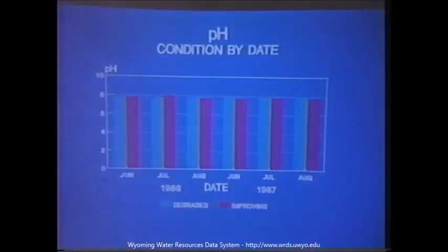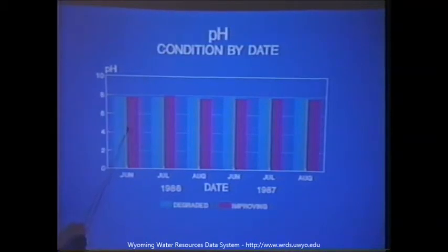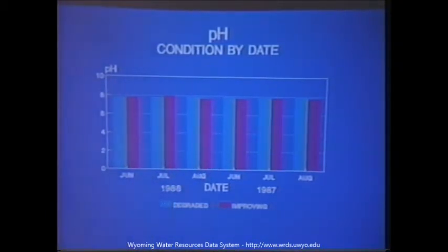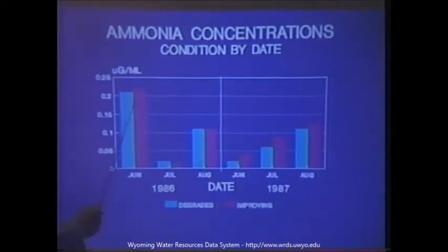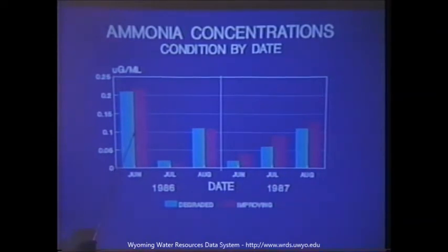For pH, there were some differences between degraded and improving conditions by date, but nothing significant emerged. One of the first things a person should look for in major differences between channel conditions is a shift in pH — due to microbial activities, if you're getting more salts, you'd expect a shift in pH. For ammonia concentrations, there were significant differences between years and between sampling dates within years. These patterns of fluctuation are primarily the result of microbial activity and plant uptake.